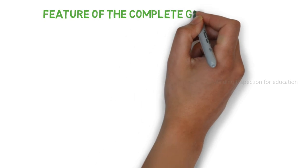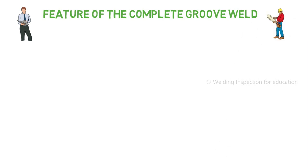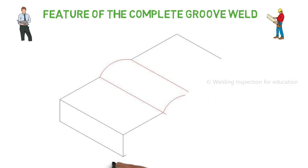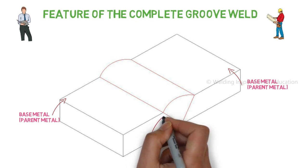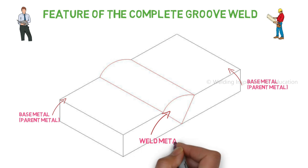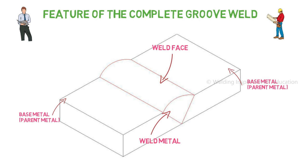In both scenarios, root opening and fit-up is very important. That is why in some specifications it is mandatory to do the inspection of the joint before the welder starts welding on it. Now let's see the features of groove weld for design engineer and inspection purposes. The first and most important thing is base metal — metal number one and metal number two. Base metal is also known as parent metal, and the complete requirement of that metal is given in the drawing or specification. Connecting base metal with each other is your weld metal, which is applied by welding process using different types of filler metal or electrodes.